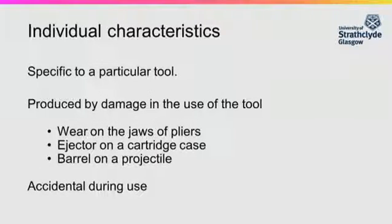Individual characteristics, on the other hand, are specific to a particular tool. These are produced by damage in the use of the tool, such as wear on the jaws of pliers, when the ejector removes a spent cartridge case, or when the projectile is passing through the barrel of the firearm. As such, these tool marks are created accidentally through use. Therefore, they can be used to show that a particular tool produced a particular tool mark, or that a specific firearm fired a projectile.